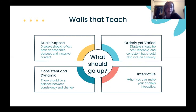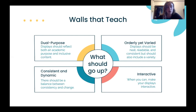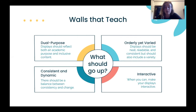Second, displays should be orderly yet varied — include a variety of 2D and 3D elements. Displays should be uncluttered and readable. Research shows that displays which either under-stimulate or over-stimulate students have a negative relationship with academic progress. Third, some displays should be consistent and some should be dynamic. Try to achieve a balance between items displayed all the time, such as multicultural identity posters, and items that change, like interactive bulletin boards. Learning is dynamic, so you want your classroom to reflect that.